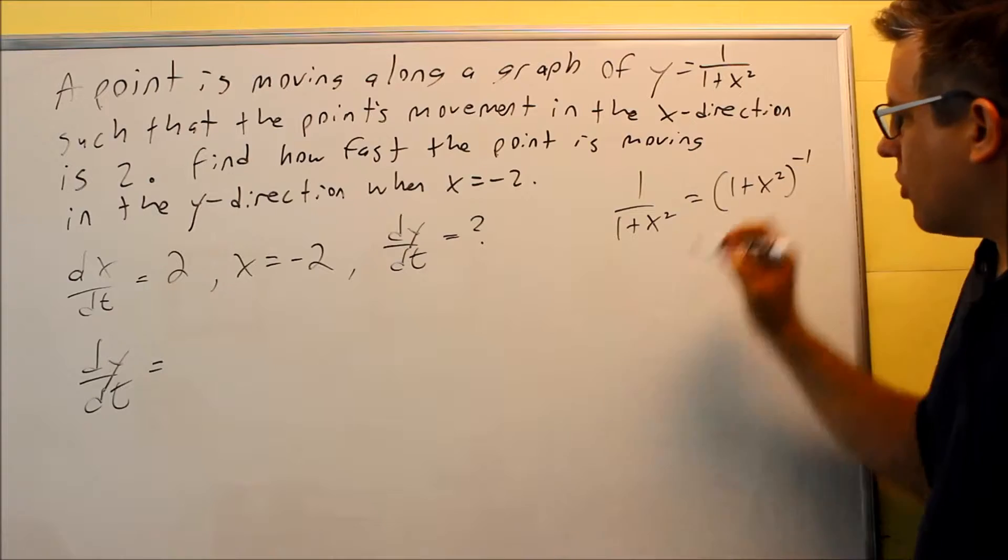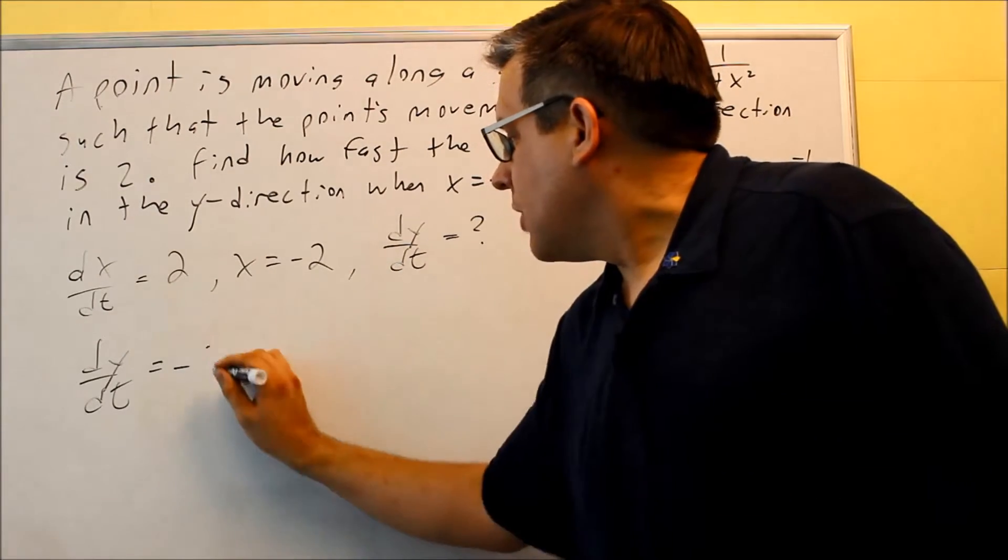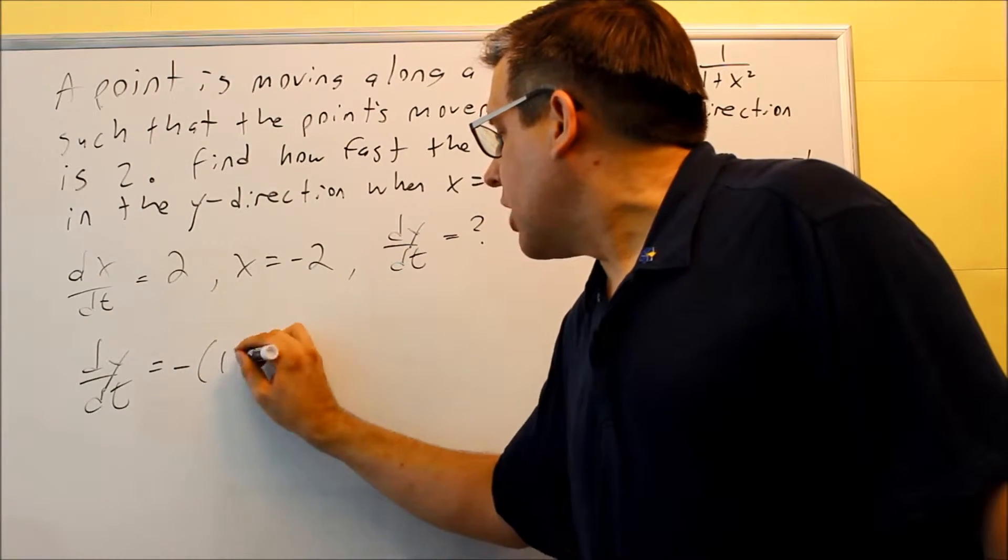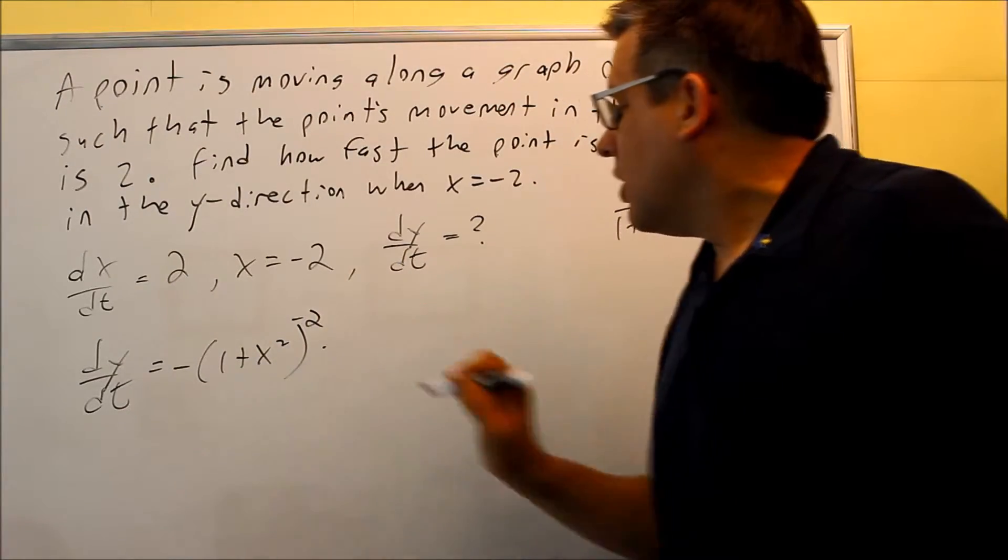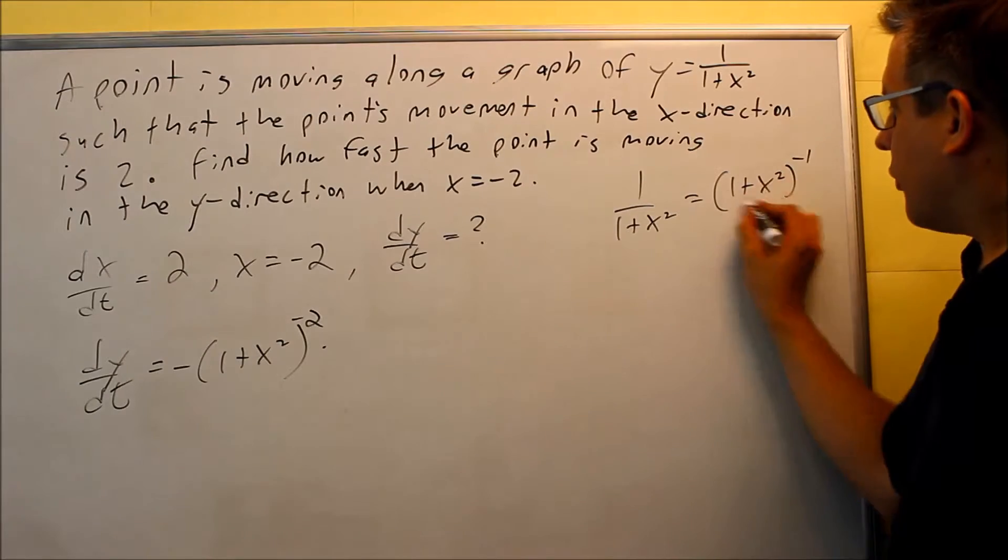So then what I do is negative 1 is going to come down. So I have negative, and I have (1 + x²), and then subtract 1 from that power—I get negative 2. And then you want to multiply it by the derivative of the inside.